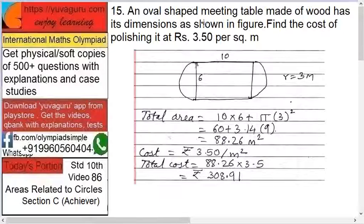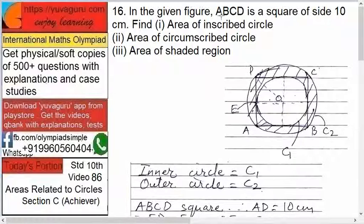Now this is the area. Now what we want? Polishing. Cost is what? 3.5 per square meter. Therefore total cost is 88.26 into 3.5, equals to 308.91. This is the total cost of polishing. Next, in the given figure...